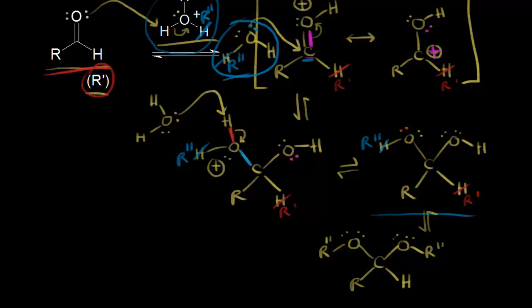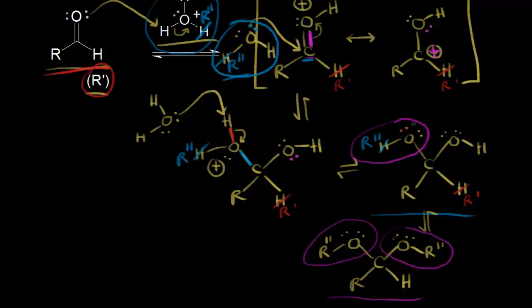Let's compare structures. With an acetal, we have an OR'' group and another OR'' group. For a hemiacetal, we had only one of those OR'' groups. We'll see much more detail about acetals in the next video.